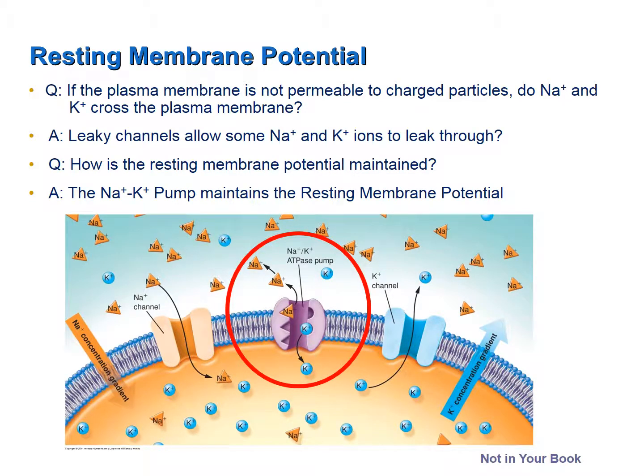These sodium-potassium pumps use ATP, and for every molecule of ATP used, three sodium ions are returned to the extracellular fluid, and two potassium ions are returned to the intracellular fluid. The sodium-potassium pumps are constantly at work, so ATP is constantly being consumed by these pumps. In fact, the sodium-potassium pumps account for about 70% of the total energy used by the nervous system.